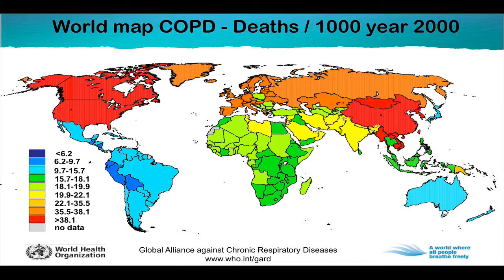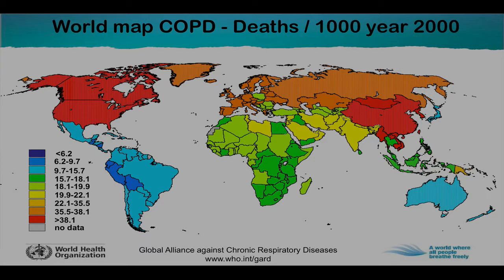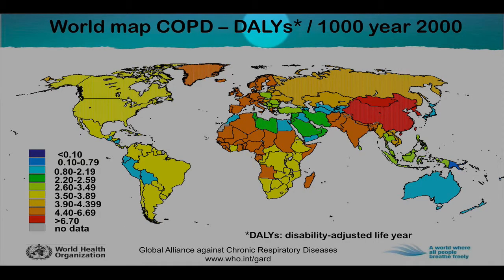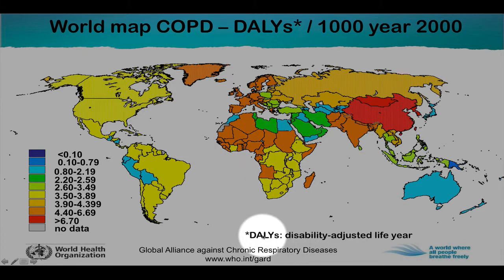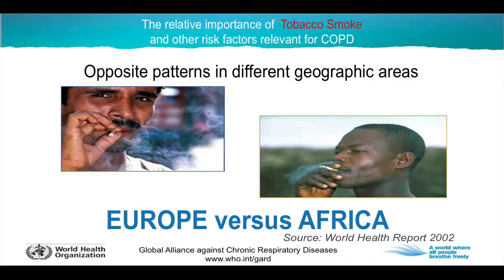Let's look at the geographical illustration of the burden of COPD to see the difference between death and DALYs. On this world map, you see the red zones around the Americas, Russia and China when looking at death. But if you look at the same map for DALYs, what was red before is now in the yellow zone, and countries in South America and Africa have a higher DALYs contribution.